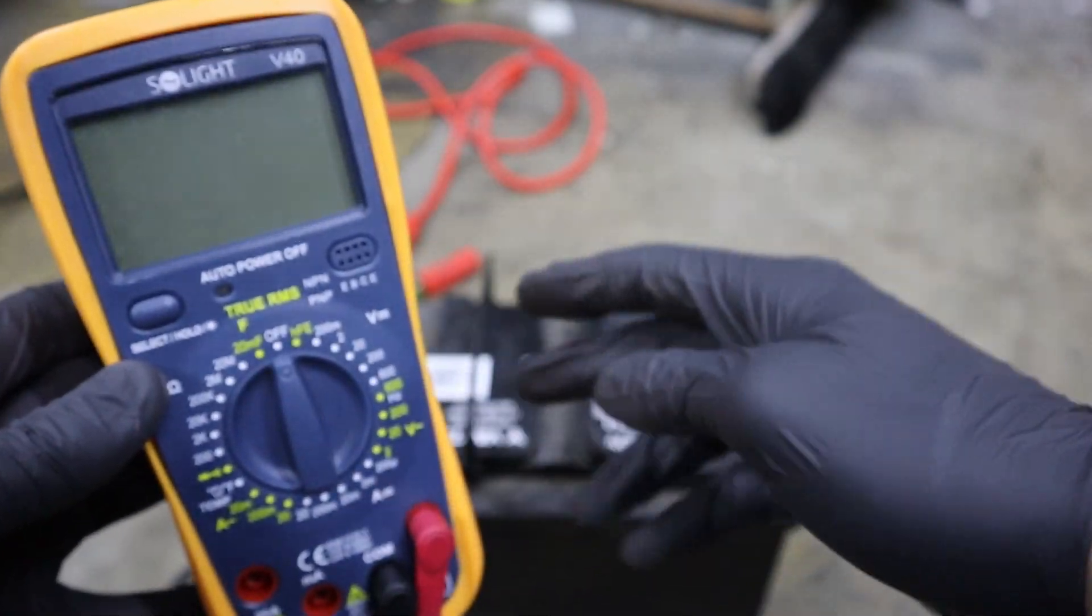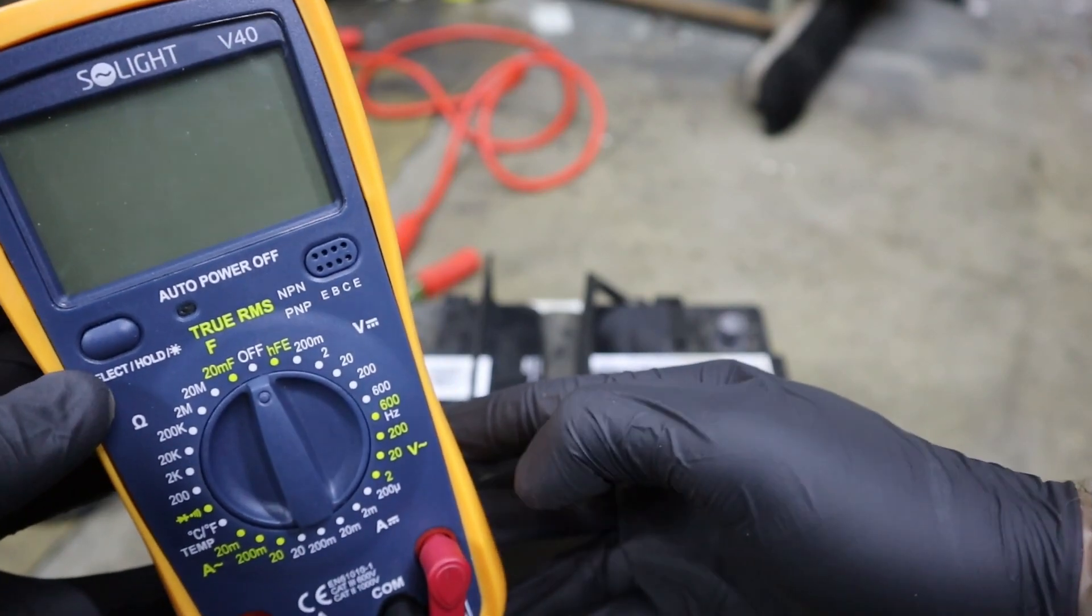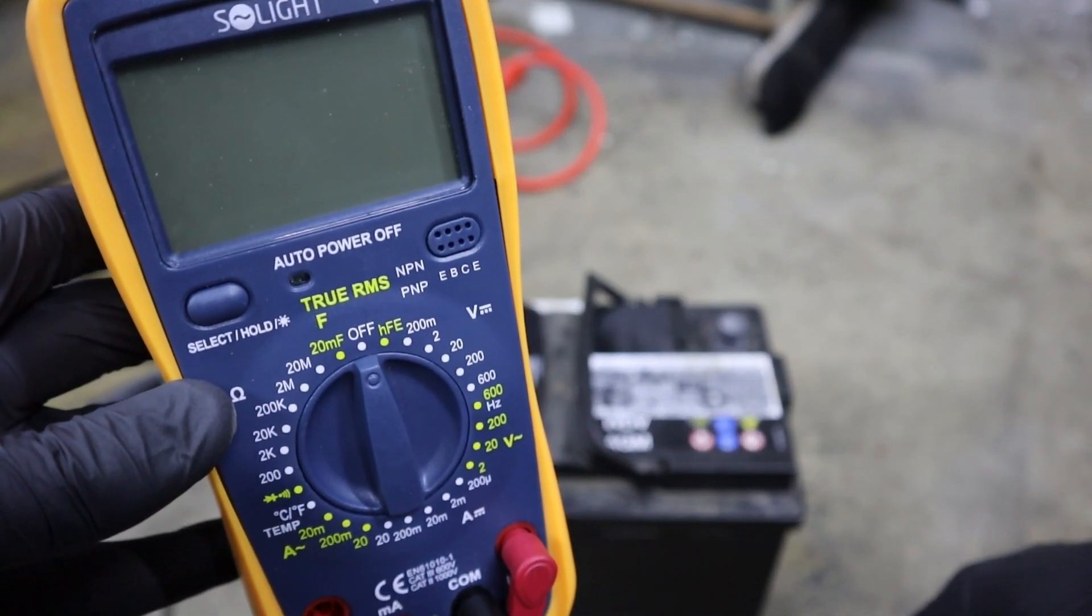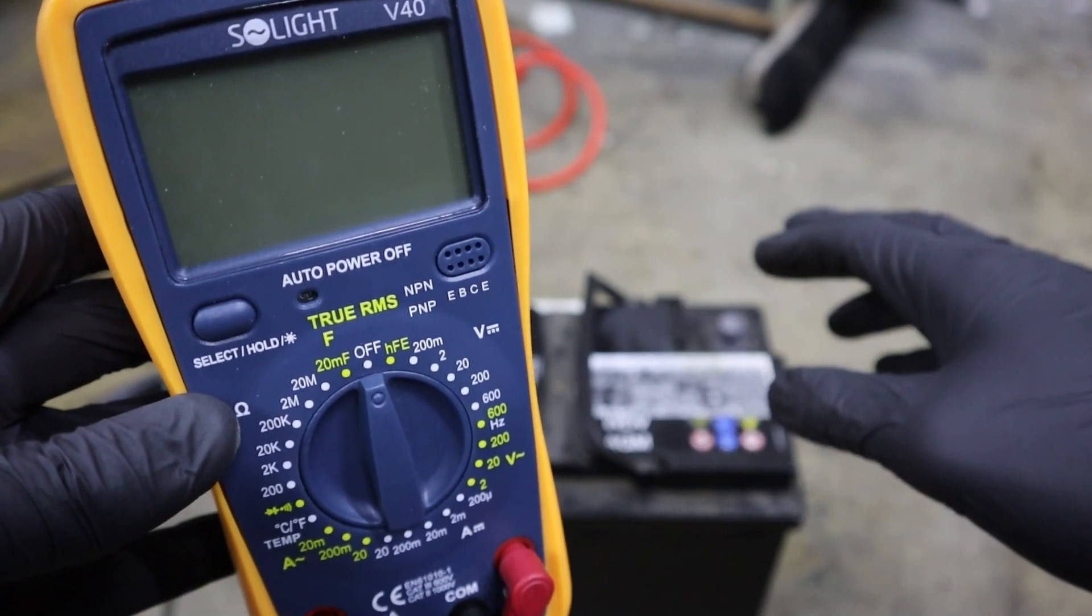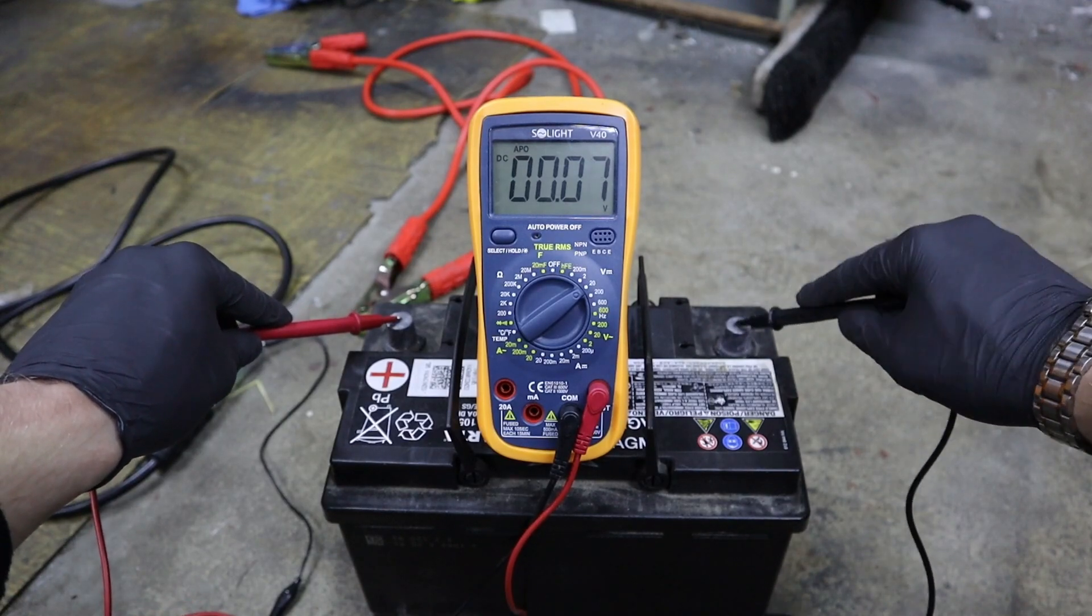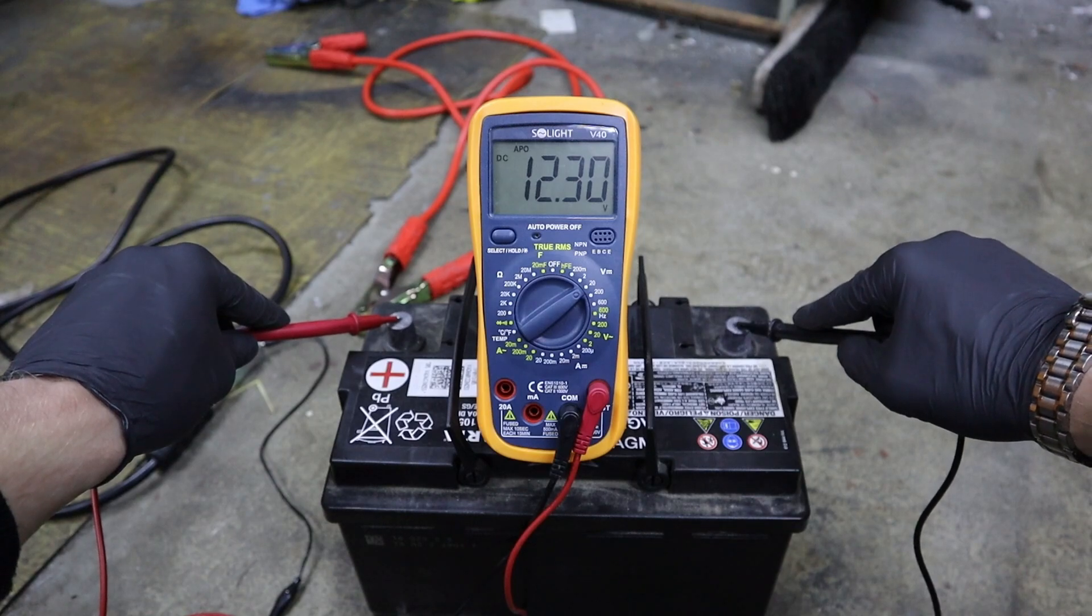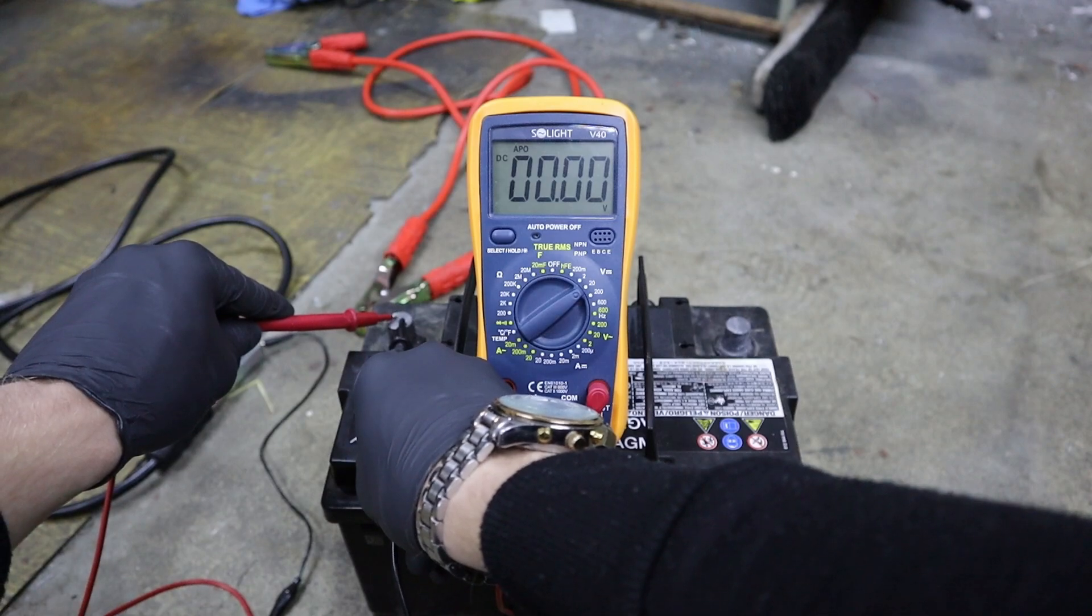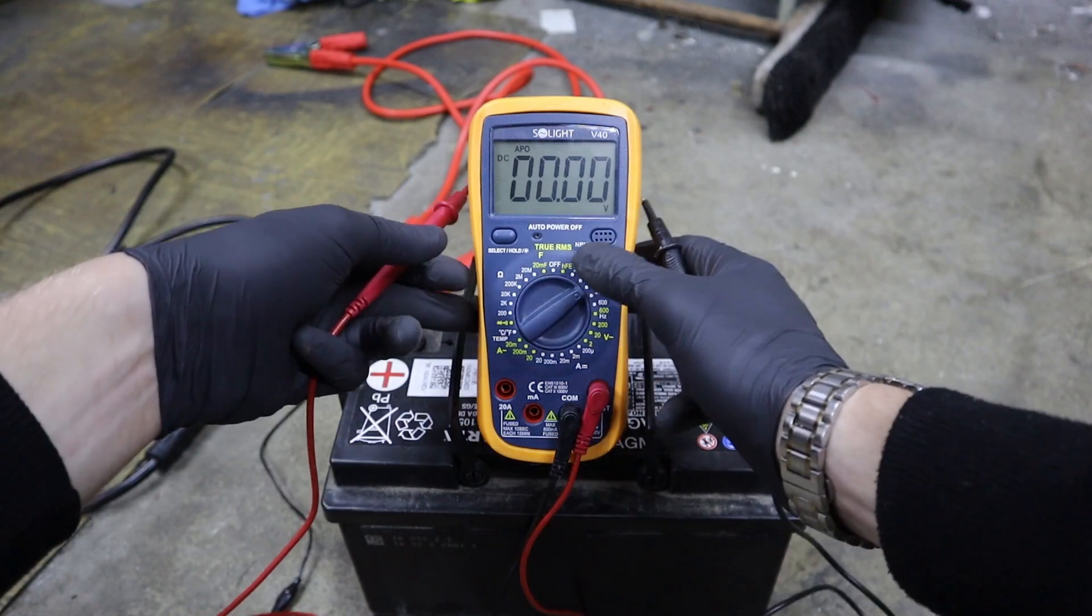On the multimeter, if you want to measure voltage, you set it to voltage and choose the number that is higher than you expect but closest possible. If we work with a 12.6V battery, the number I want to select is 20, because 2 volts is too low and 200 is too much and won't do precise measurements. Let me set it to 20. One lead on the positive, second on the negative, and we have 12.3V. The battery should be charged a little, but for these experiments it will be enough. If I put two leads on one terminal, it reads zero, also on the second terminal.